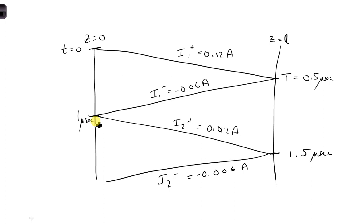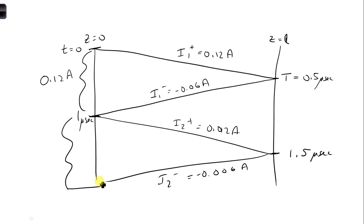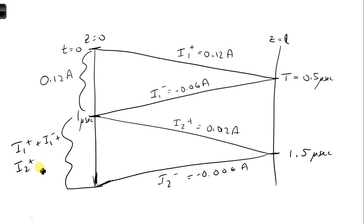Also as part of this question, we label the current amplitudes at the generator and at the load over time. At the generator, over the initial time span, we only have I1 plus, so the current is 0.12 amps. At the moment I1 minus reaches the generator, and until I2 minus reaches the generator, we have I1 plus, I1 minus, and I2 plus — because the switch is still closed — and all these together give 0.072 amps.